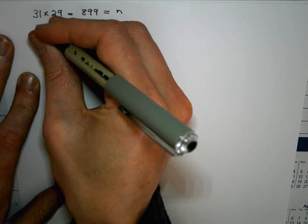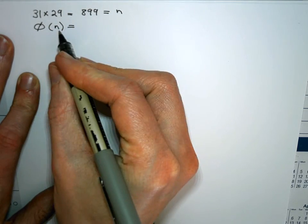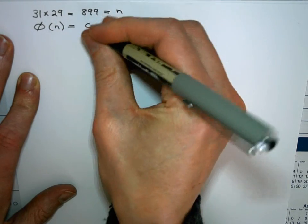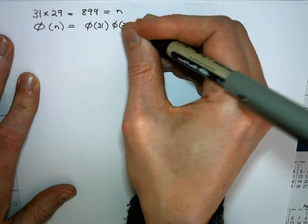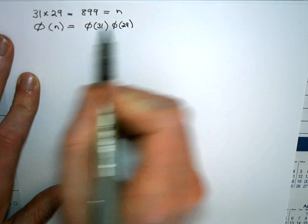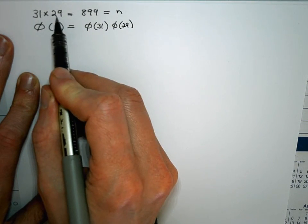Then we also are going to be interested in φ(n), Euler's function applied to n, which in this case will just be φ(31) times φ(29). I can do that. I can distribute the φ over the product because 31 and 29 are relatively prime.